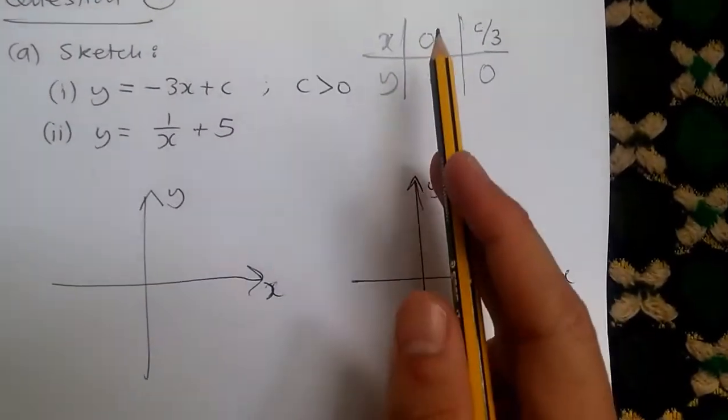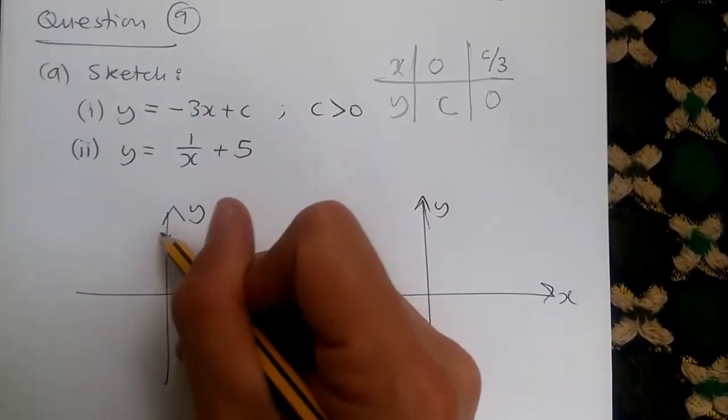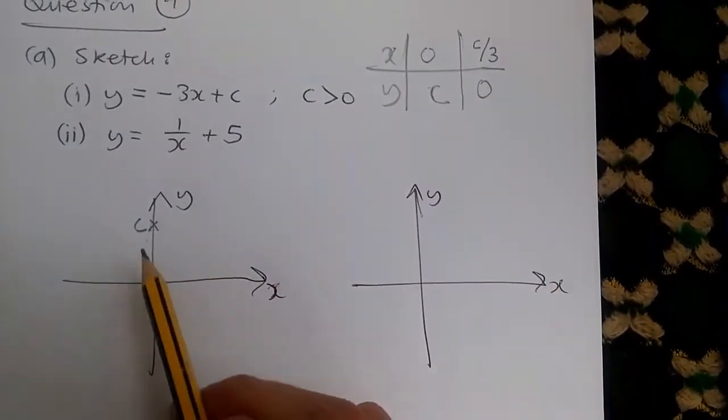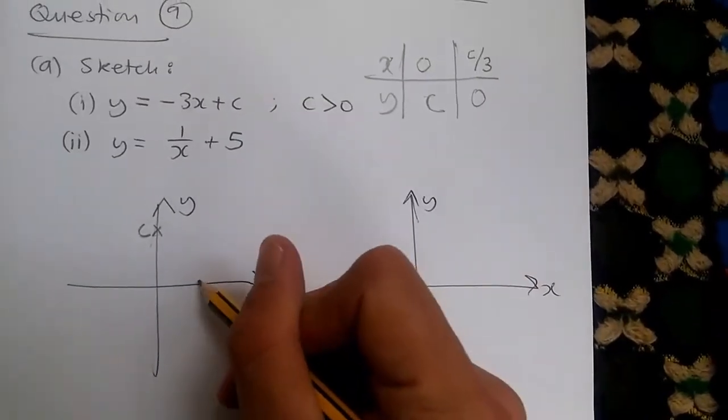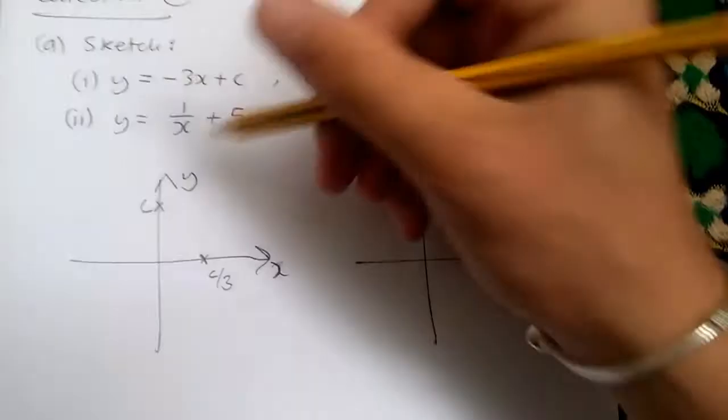Easy, so plot on this across. This tells you when x is 0, y is c, and here, when y is 0, x is c over 3. So let's just say c over 3 is here, for convenience sake, it doesn't have to be accurate.